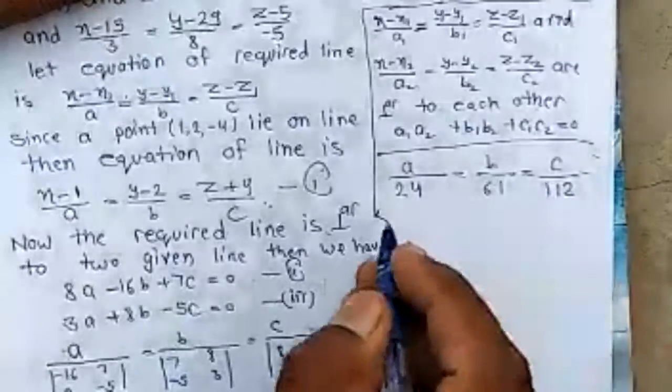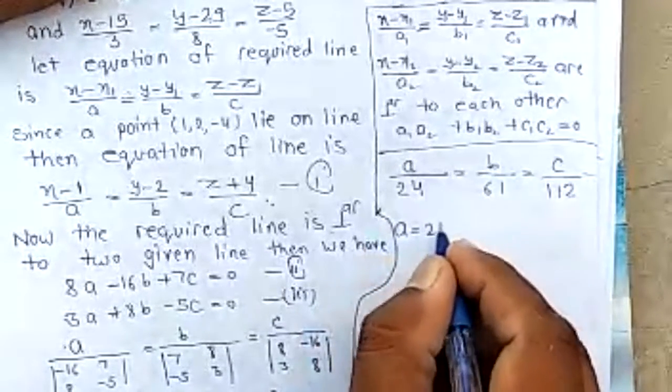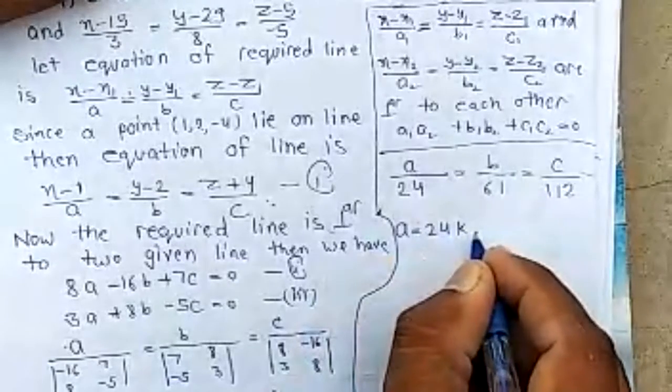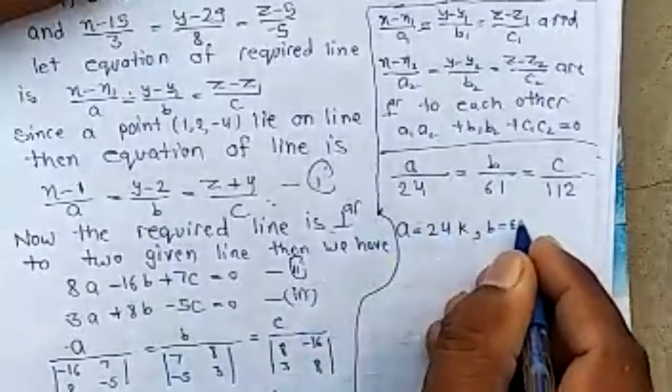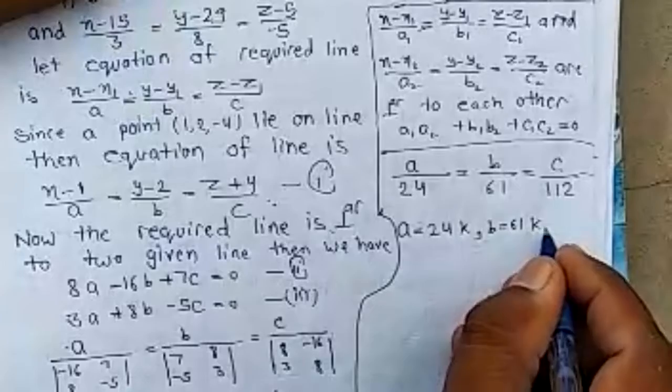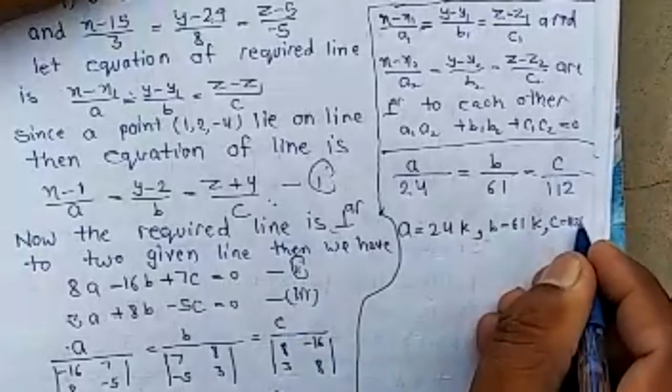c by 112. Then value of a is 24k, b is 61k, c is 112k.